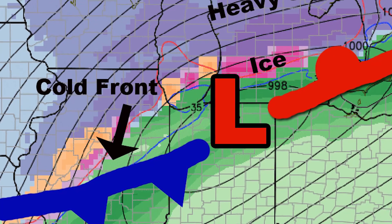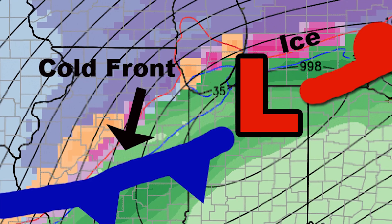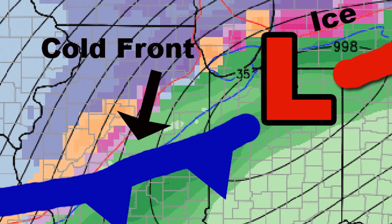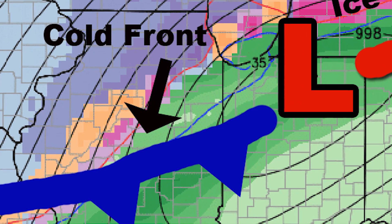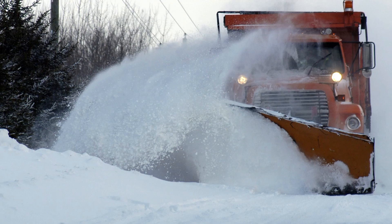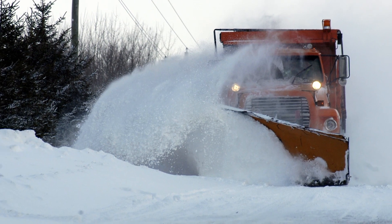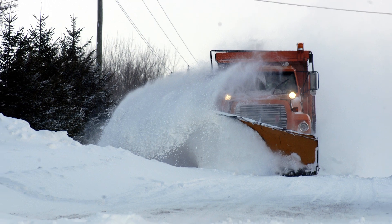And then there's the trailing cold front — blue line with the blue triangles. Not a whole lot of snow occurs along that, just spurts, but it's enough sometimes to make the roads slick.